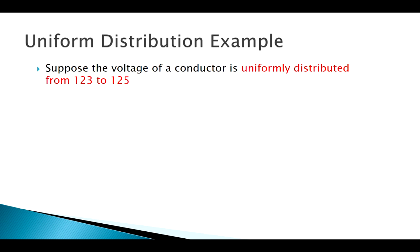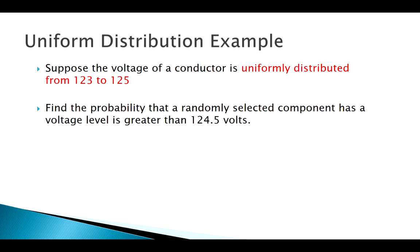Say we want to find the probability that a randomly selected component has a voltage greater than 124.5 volts. Where do we start with continuous random variables? Remember we're working with density curves. Continuous random variables are really more of a visual thing. The visual for discrete random variables is that table, but with a continuous random variable, a good place to start is always to draw a picture.